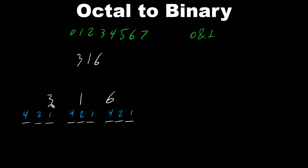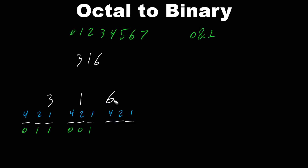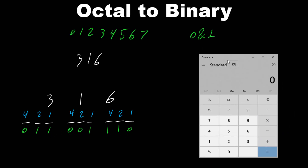Now let's convert 3 1 6. For 3, we need 2 and 1 — so off, on, on. For 1, only the one bit is turned on. For 6, we need 4 and 2 turned on. Therefore octal number 3 1 6 gives us the binary number 0 1 1 0 0 1 1 1 0.